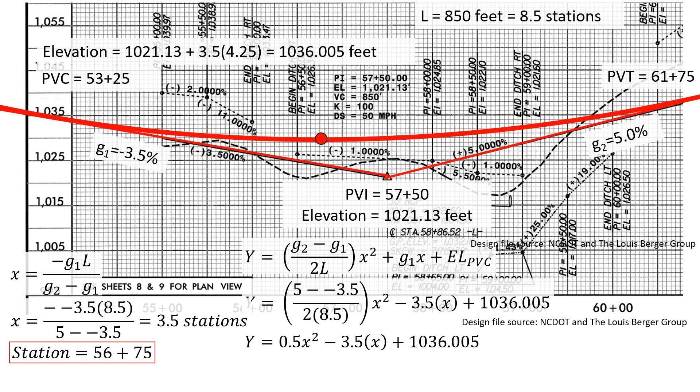So simplifying this we have our equation Y equals 0.5 times X squared minus 3.5 times X plus 1036.005.